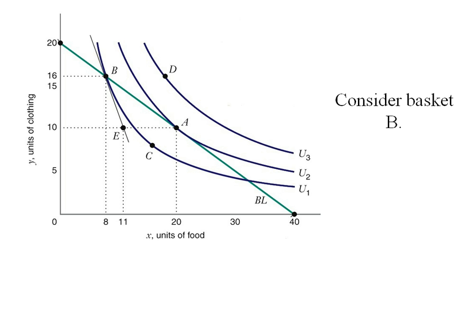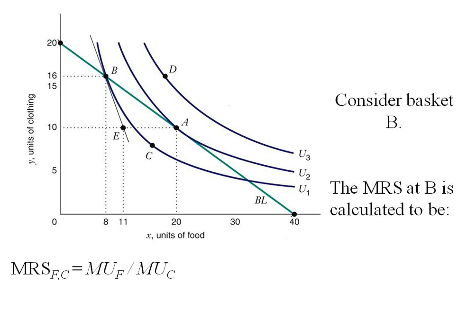Let's consider basket b. The marginal rate of substitution at b — we can find its expression. It's going to be the marginal utility of f divided by the marginal utility of c. Looking back at our previous slide, we can plug in c over f. This is the rate at which I'm willing to give up clothing to get one more unit of f. Now at basket b, we know what clothing and food are: 16 units of clothing and 8 units of food. Plugging that in, the marginal rate of substitution at b is 2. This consumer is willing to give up 2 units of clothing to get one more unit of food.